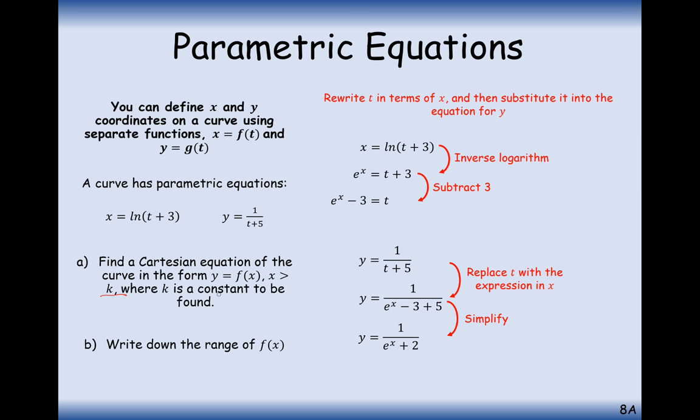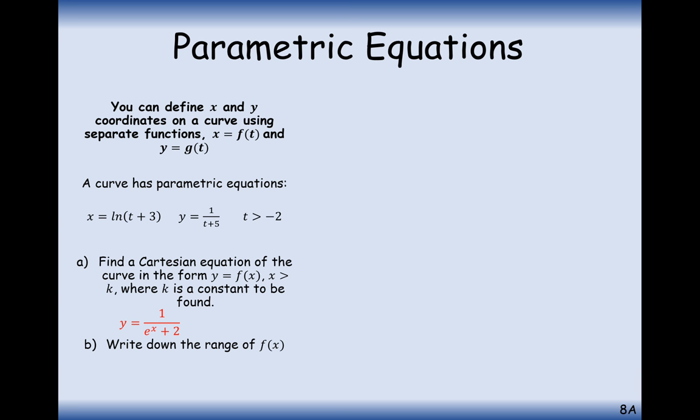But now we haven't quite finished part a yet. We still need to work out the domain x is greater than something. We are told in this question that t has to be bigger than minus 2. So, that's going to have an indicator on what x is going to be allowed to do. Let's start substituting in t equals minus 2 and just see what happens. Effectively, we're seeing what the starting point is. We're going to see here that x is equal to ln 1 or that x is equal to 0. So, it looks like it's going to be something to do with 0. Either it's going to be bigger than 0 or less than 0.